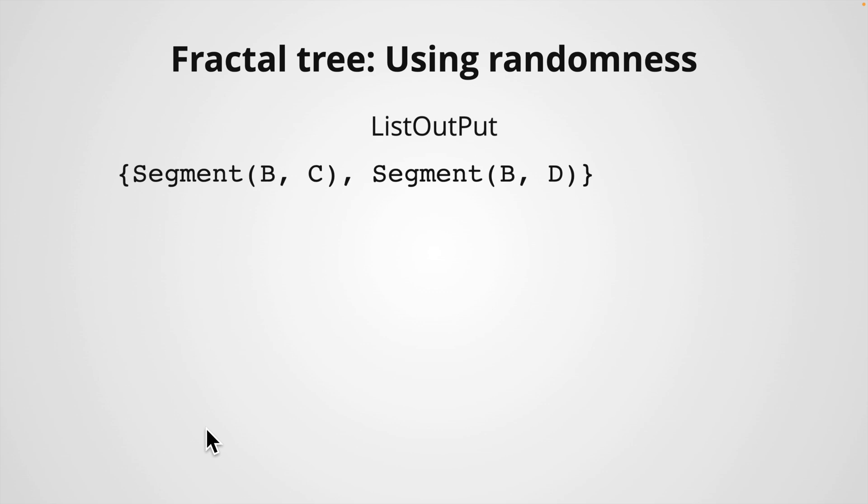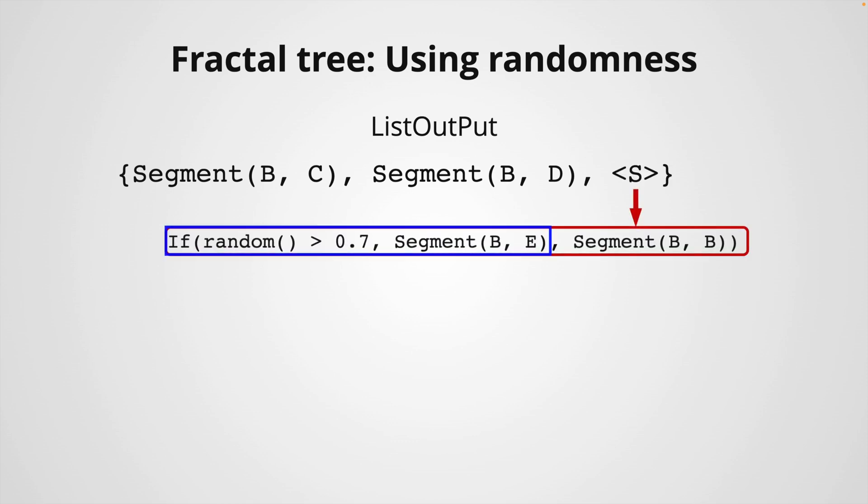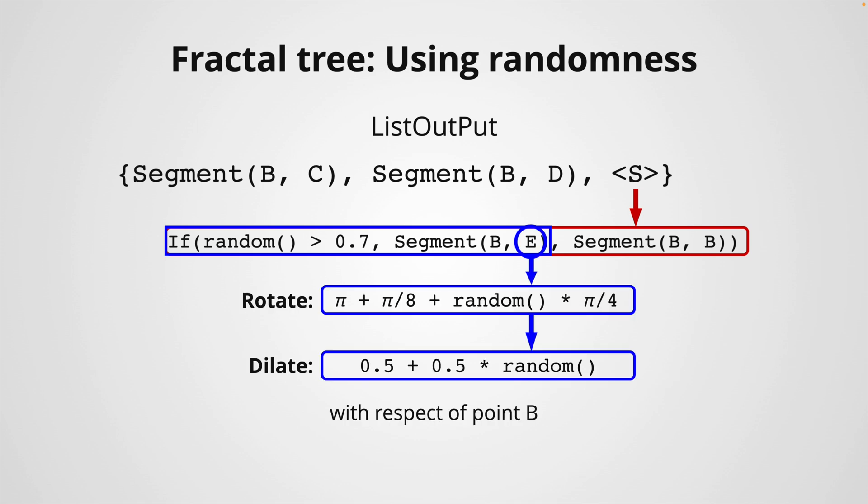To make things even more interesting, we can add an extra branch randomly by including in our list output the following code. This creates a new branch if the value random is greater than 0.7. The new branch is defined with another point, which is obtained by rotating point A with a random angle and shrinking it a random factor with respect to point B as well. By the way, I have chosen these values arbitrarily. You can use other random numbers if you prefer and see what happens.